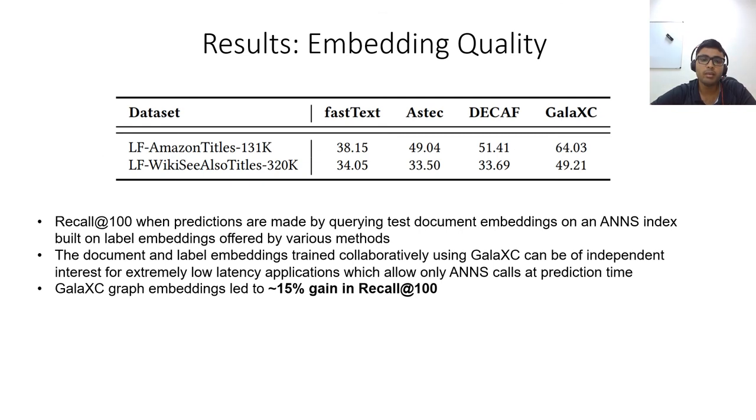The document and label embeddings trained collaboratively using Galaxy can be of independent interest for extremely low latency applications, which disallow the use of extreme classifiers and allow only approximate nearest neighbor search calls at prediction time. Compared to embeddings offered by Fastex, Aztec and Decaf, Galaxy's embeddings were found to be around 15% better in recall at 100 on two benchmark datasets.